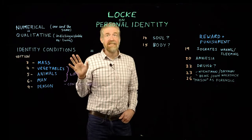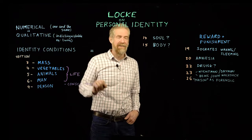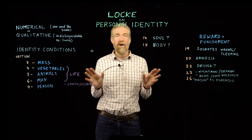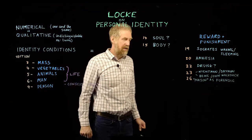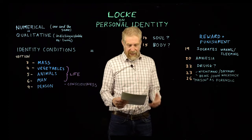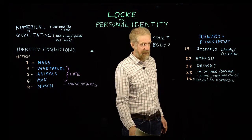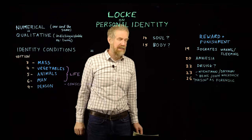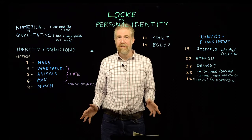Slightly confusingly, we also talk about identical twins. What we're talking about there is qualitative identity - what that means is that they're indistinguishable; you cannot tell one from the other, they have all the same properties. But that is not the same as numerical identity. Locke makes that clear at the beginning of his section on identity and diversity - he doesn't mean qualitative identity, he's going to be talking about numerical identity. What does it take to be literally one and the same individual?